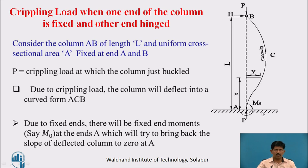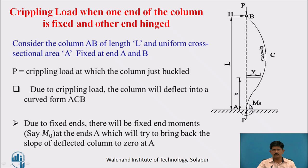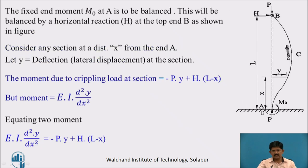Now, the crippling load when one end of the column is fixed and the other is hinged. Here you can see a column of length L and cross-sectional area A, which is fixed at end A and hinged at end B, and it is applied with the crippling load P. Due to this crippling load the column will deflect. As end A is fixed, there will be a fixed end moment M₀ which will try to bring the slope of the column back to zero at A. To balance this moment M₀, we require a horizontal force H, which will counterbalance this moment.